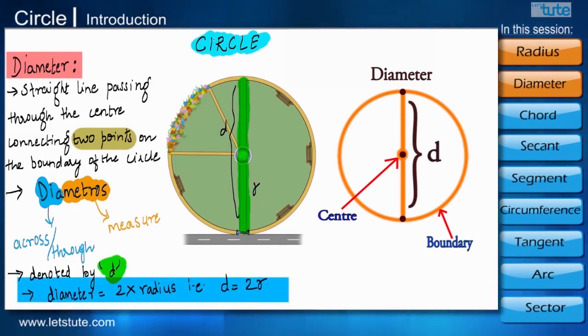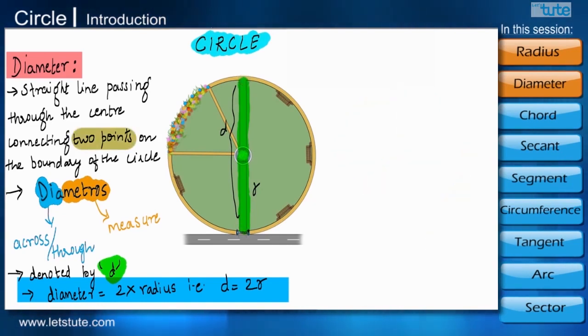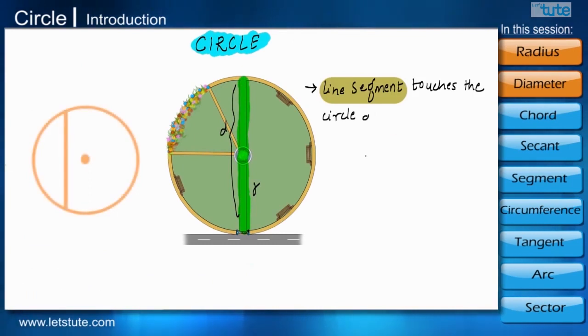As you can see that diameter touches the circle at two different points. Well, when any line segment which touches the circle at two different points, it is known as a chord of the circle.